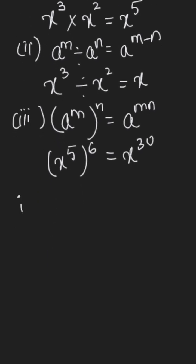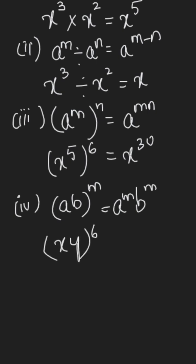Then the next one is the power of the product rule which means a b whole power m will be equal to a power m b power m. So something like x y whole power 6 will be equal to x power 6 multiplied by y power 6.